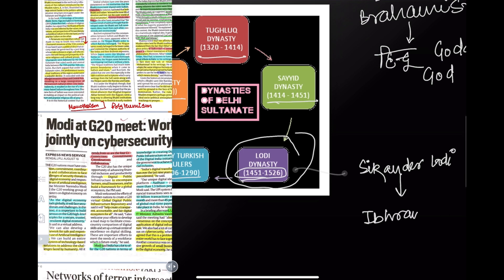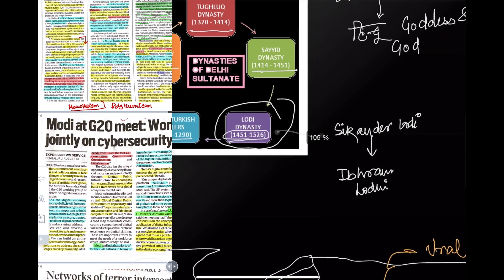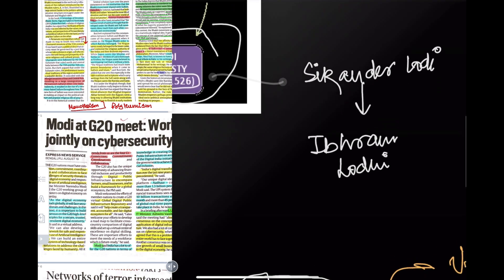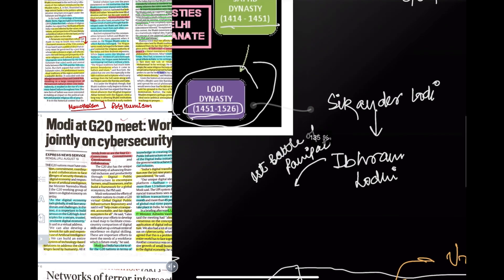The last ruler of the Delhi Sultanate was Ibrahim Lodi, and his fight — known as the First Battle of Panipat — took place in 1526 against Babur.